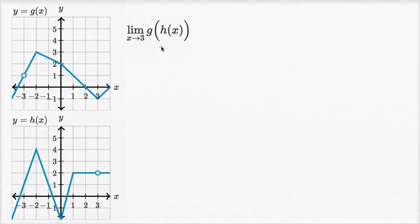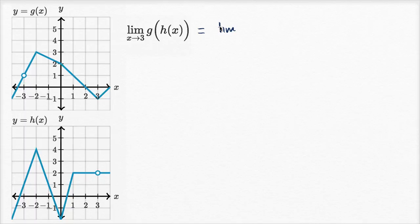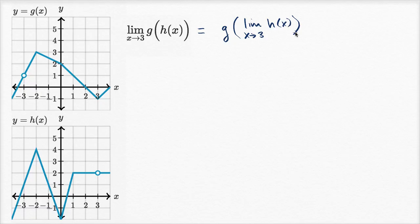Let's now take some limits involving composite functions. Over here we have the limit of g of h of x as x approaches three. We can leverage our limit properties. This is going to be the same thing as g of the limit as x approaches three of h of x. So we just need to figure out what the limit of h of x is as x approaches three.